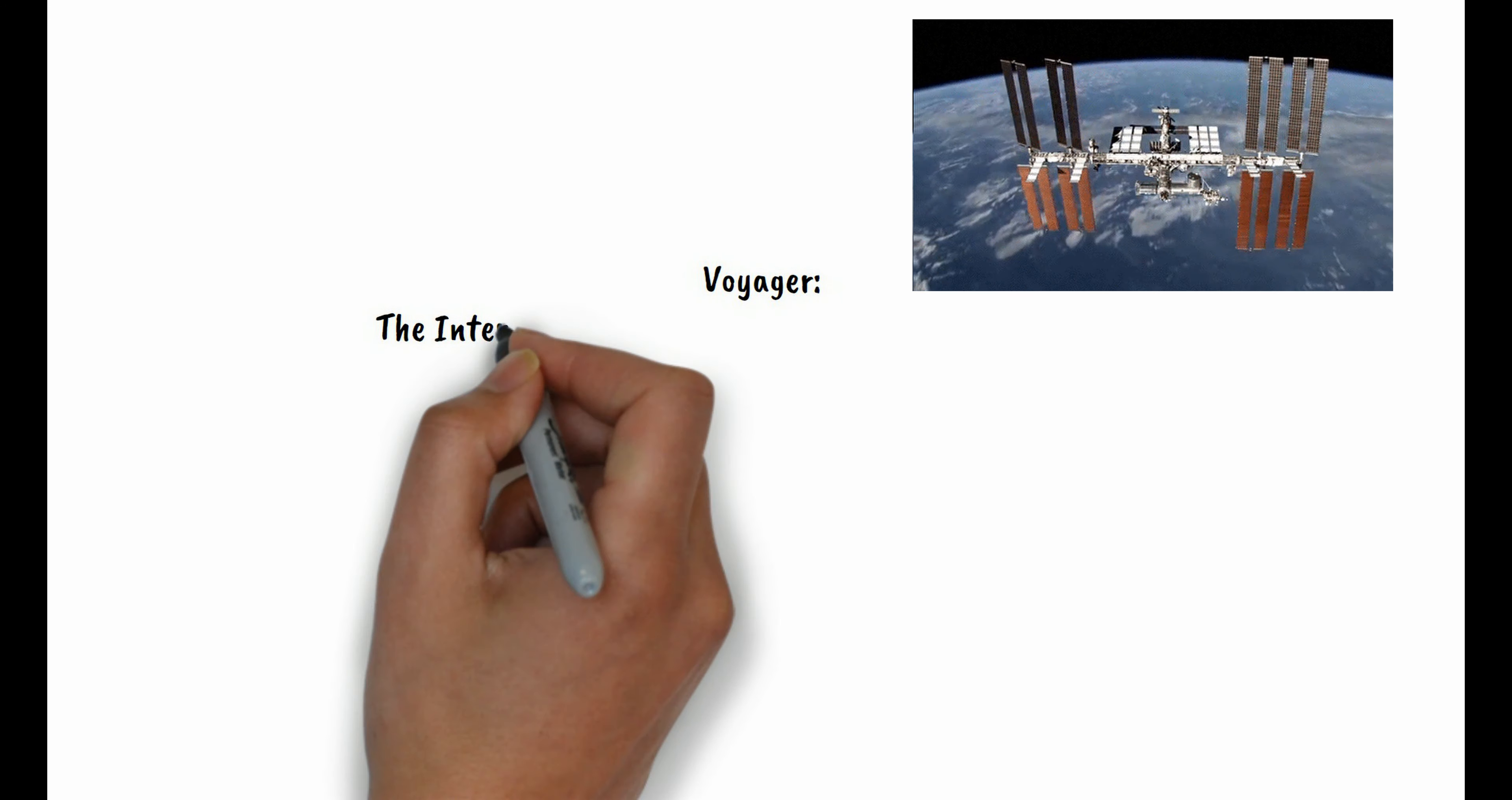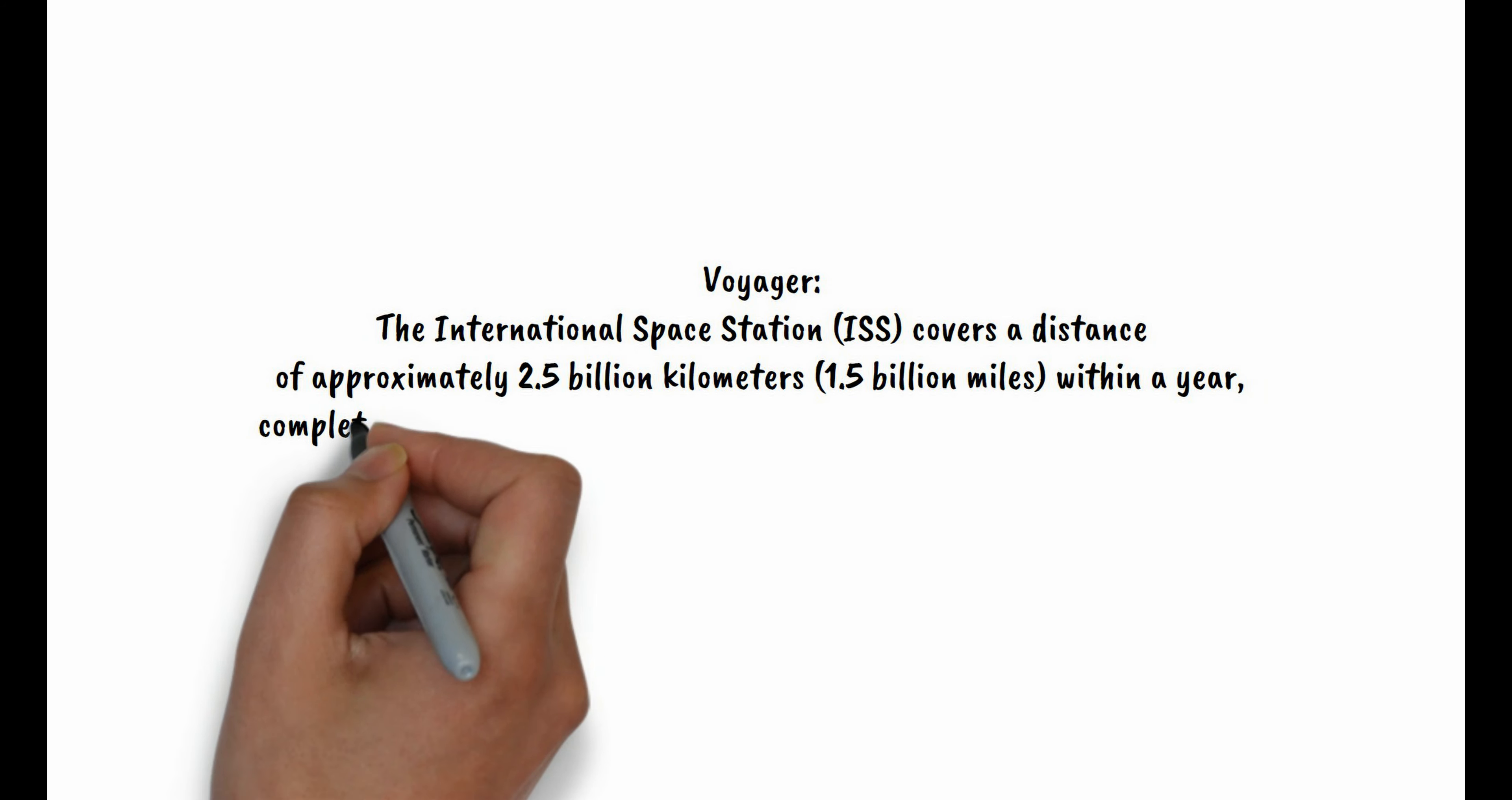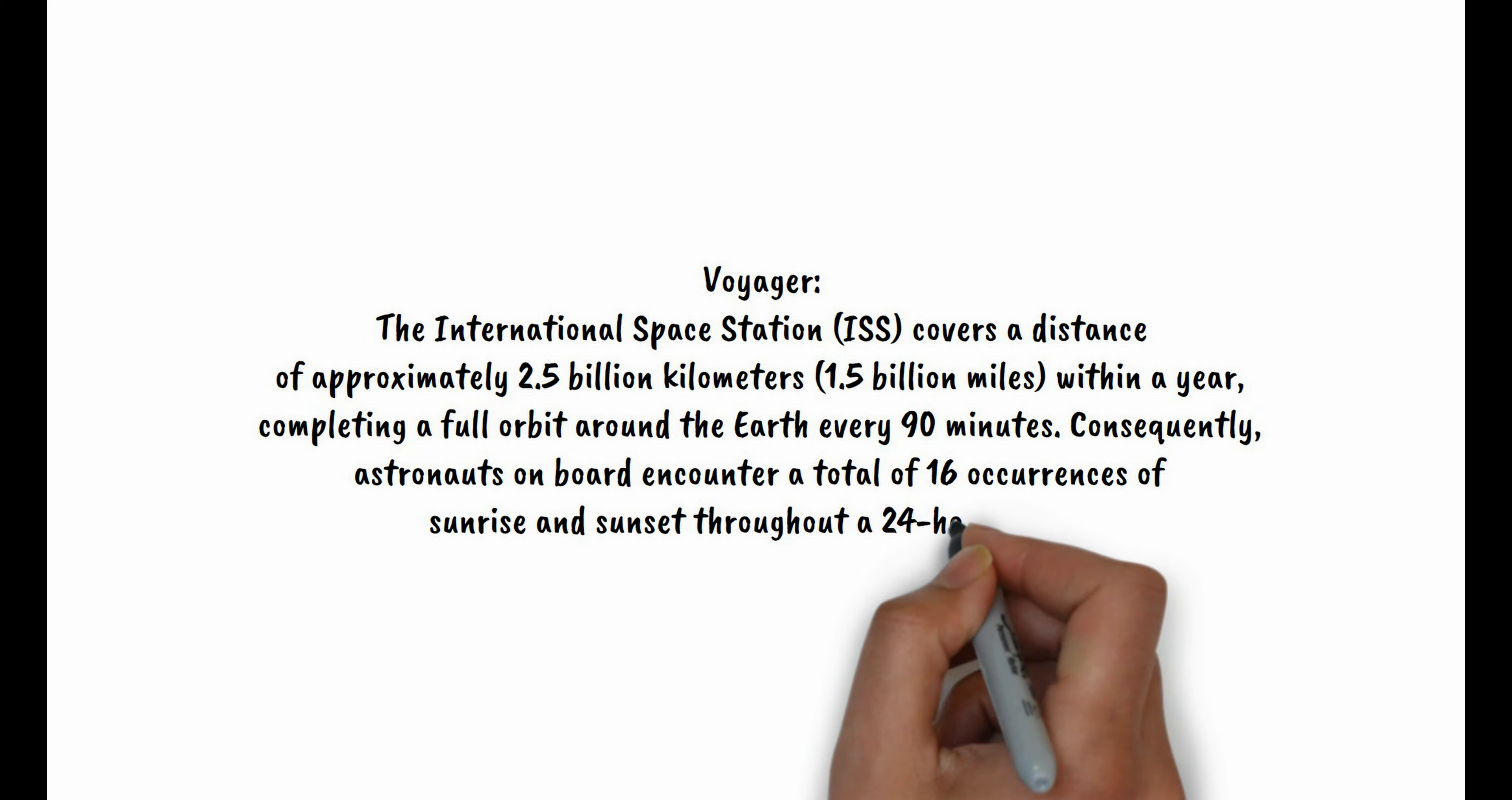Distance Traveled: The International Space Station covers approximately 2.5 billion kilometers (1.5 billion miles) within a year, completing a full orbit around Earth every 90 minutes. Consequently, astronauts on board encounter 16 occurrences of sunrise and sunset throughout a 24-hour period.